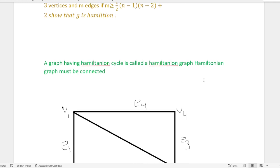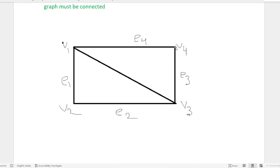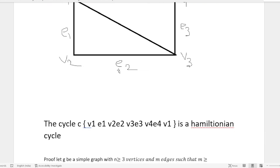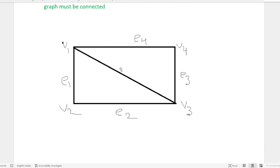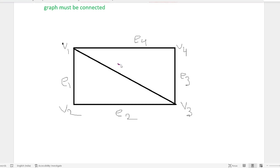A graph having a Hamiltonian cycle is called a Hamiltonian graph. Hamiltonian graph must be connected. This graph has vertices v1, v2, v3, v4 and edges e1, e2, e3, e4, and e5.